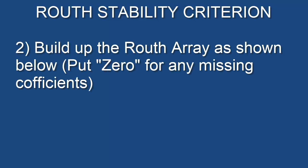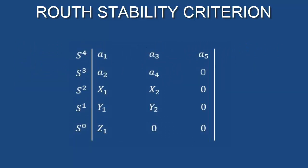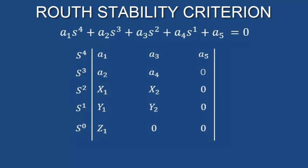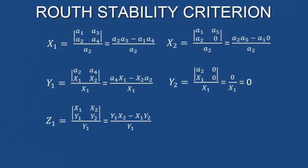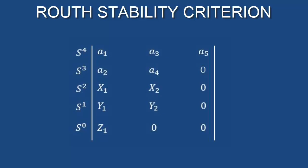Based on the characteristic equation, the array will be formed. Second, build up the Routh array as shown. Put zero for any missing coefficient. The number of rows in the array equals 1 plus the highest order of the equation. For example, if the highest order is 4, then the number of rows will be 5. The first two rows of the array are formed by using the given coefficients of the equation, dividing them as even or odd depending on the highest order. Remaining rows are evaluated using the above two rows — values x1, x2, y1, y2, and z1 are evaluated using the formula shown. If the first two rows contain three elements, then the next two rows contain two elements, and the next two contain one element, and so on, depending on the situation and highest order of the equation.